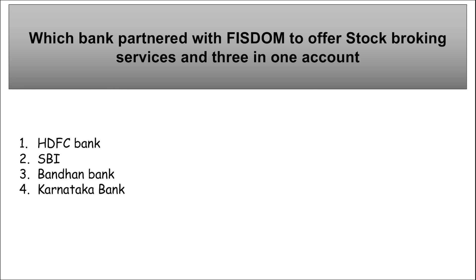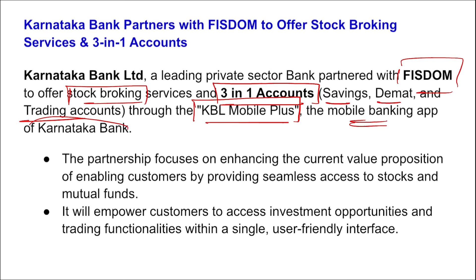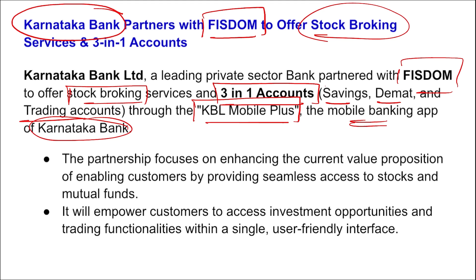Next: which bank has partnered with Fisdom to offer stock broking services and three-in-one account services? It is Karnataka Bank, a leading private sector bank. Karnataka Bank has partnered with Fisdom to offer stock broking services and three-in-one account services — that is savings account, demat account, and trading account. This will be done through their mobile banking application, KBL Mobile Plus. Fisdom is a digital wealth management platform.